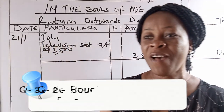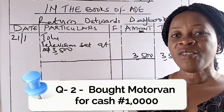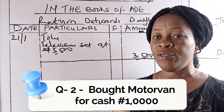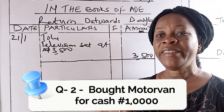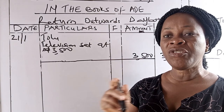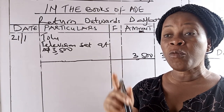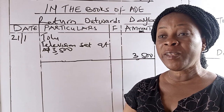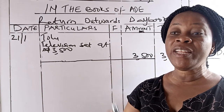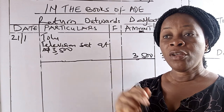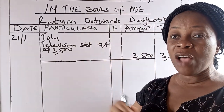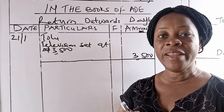Next: goods bought for cash at 1,000 Naira. As stated earlier, whenever there is an exchange of cash, such a transaction goes to the cash book. It will not be recorded in the Return Outwards Day Book.